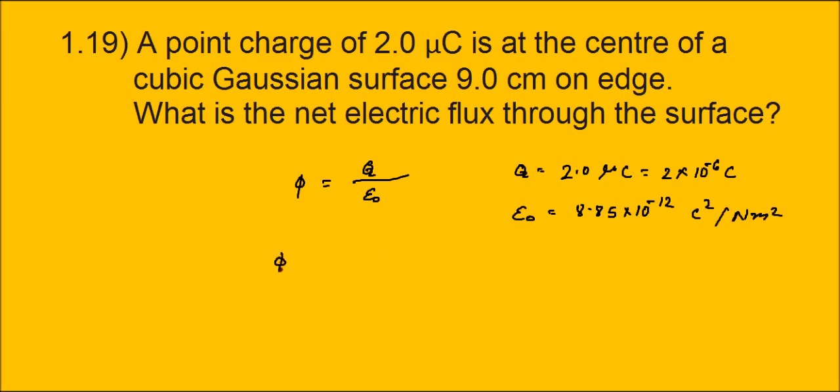So flux is equal to Q by epsilon 0, which is equal to 2 times 10 to the power minus 6 divided by 8.85 times 10 to the power minus 12, which is equal to 2.26 times 10 to the power 5 newton meter squared per coulomb.